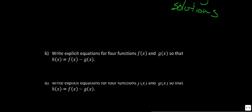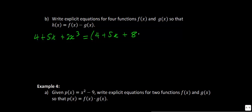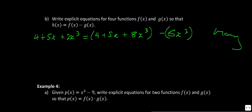The next part asks for h(x) = 4 + 5x + 2x³ written as the difference of two functions. Again, many solutions exist. One approach: let f(x) = 4 + 5x + 8x³, then subtract g(x) = 6x³. That gives the resulting function we're looking for.